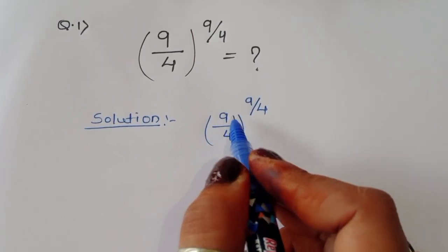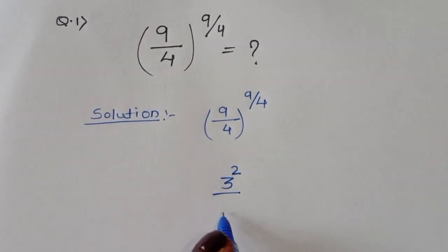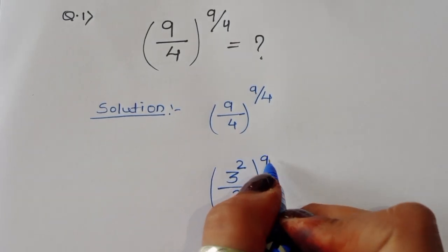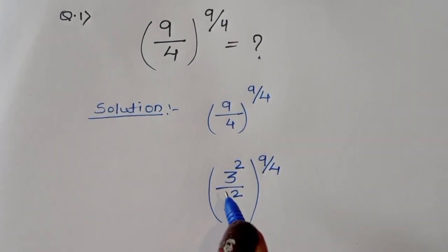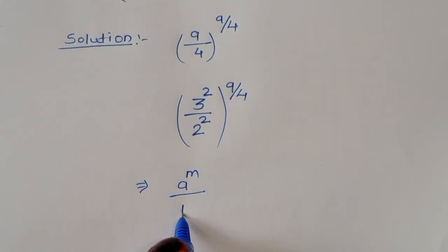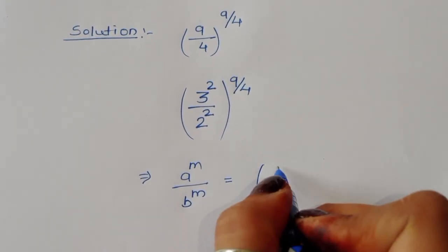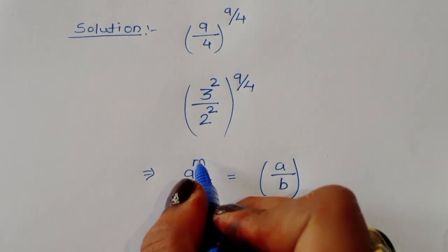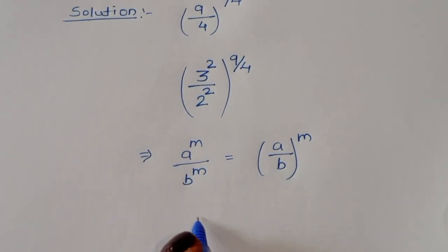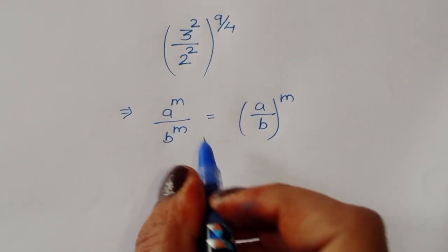We can convert 9 into power form: 3 power 2. So the expression becomes (3² / 2²) to the whole power (9/4). Now we know the formula: a^m divided by b^m equals (a/b) to the whole power m, since the power is the same. So we can write this as (3/2) to the power 2, to the whole power (9/4).